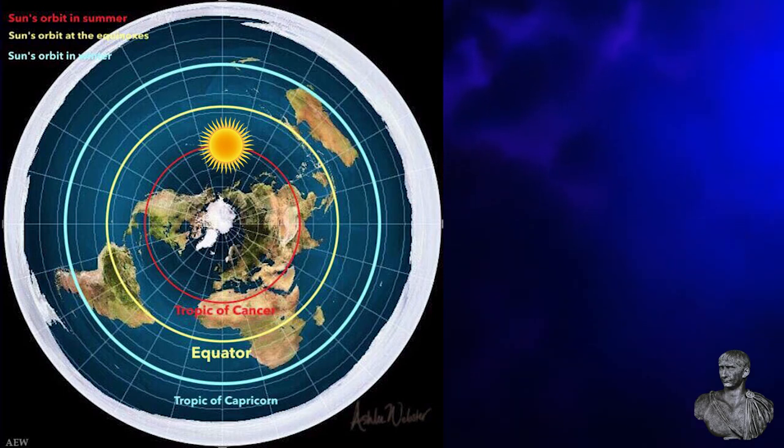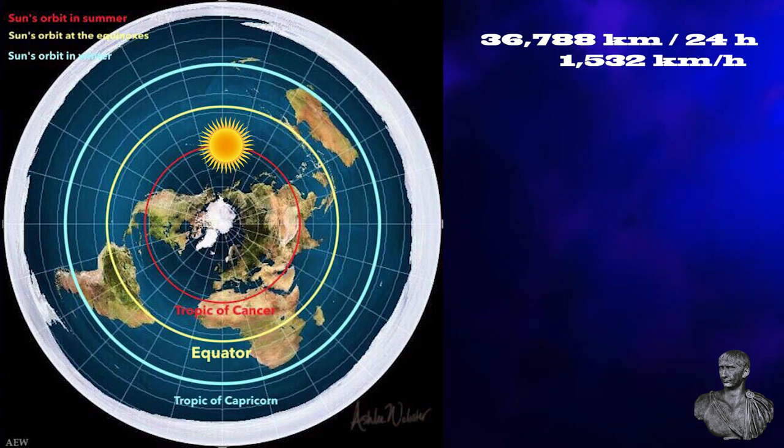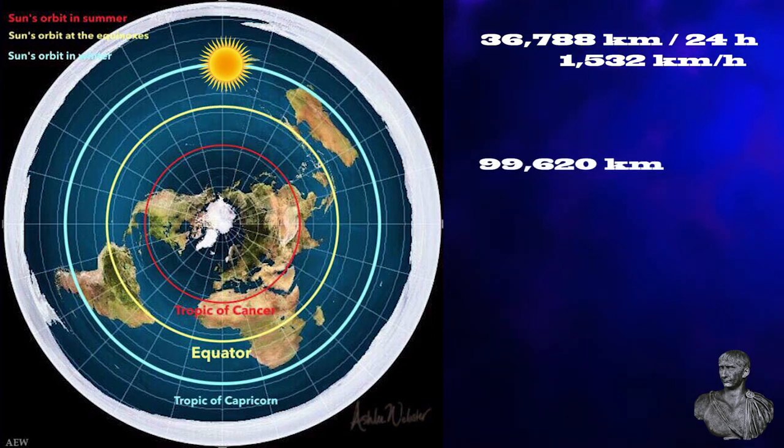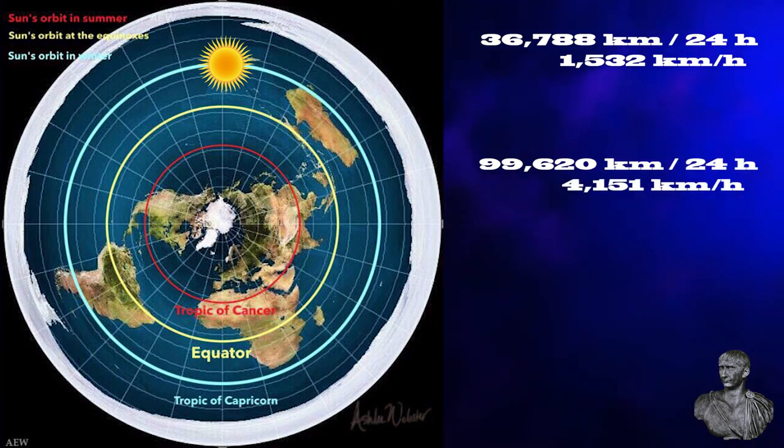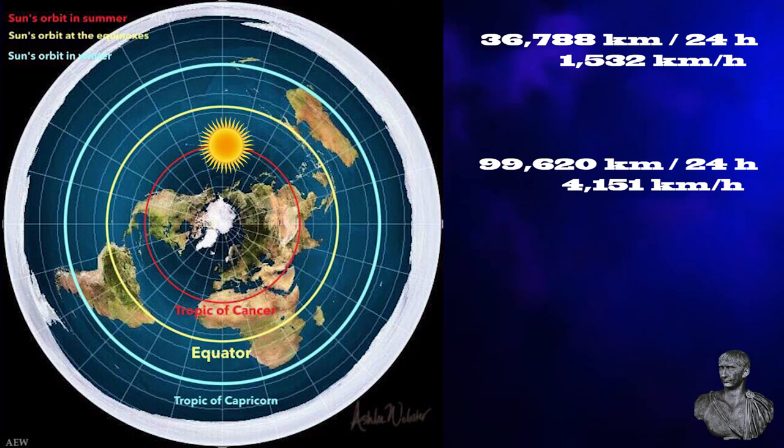Or more precisely, the sun would have to change not only direction, but its speed from 36,788 kilometers in 24 hours, or 1,032 kilometers per hour over the Tropic of Cancer, to 99,620 kilometers in 24 hours, or 4,151 kilometers per hour over the Tropic of Capricorn. And then back again. And again, all this in a year.